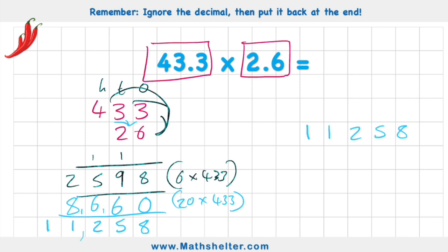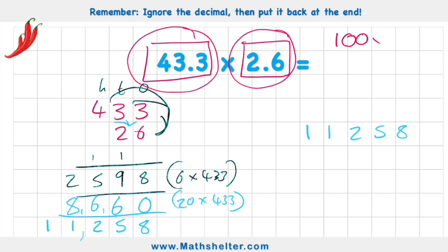Let's put it over here. However, what I did — I made this number 10 times larger and this number 10 times larger. So altogether I made it 100 times larger, because 10 times plus 10 times is 100 times. Now what I need to do is make this answer 100 times smaller. So let's put this into place — ones, tens, hundreds, thousands, ten thousands. And 100 times smaller means moving these digits two places down our place value.